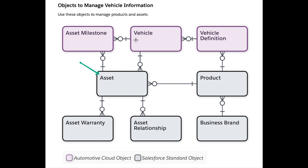What's an asset in contrast to the product? The asset carries information of a product that has been sold — a vehicle that has been sold to a customer, or a part or an accessory that is installed or sold as a spare part.